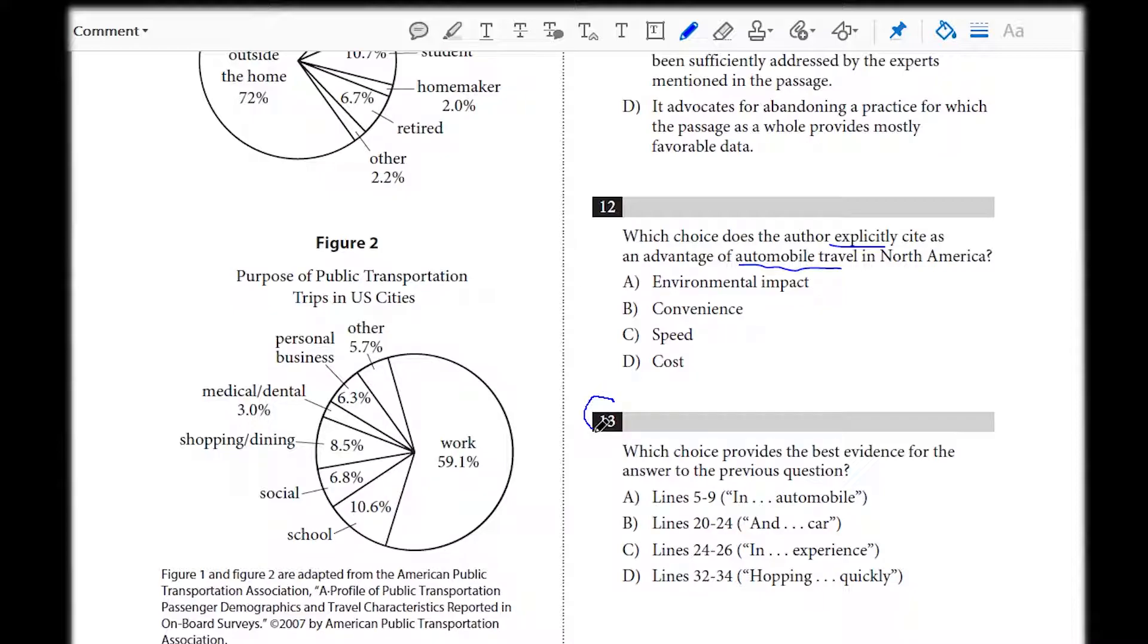We know one of the answers here has to have evidence here. So we could look at each of these lines and see if they are speaking to a specific choice found in question 12. And if so, are they actually an explicit advantage of automobile travel? That is to say, are they actually answering what number 12 wants us to find? So let's go do that.